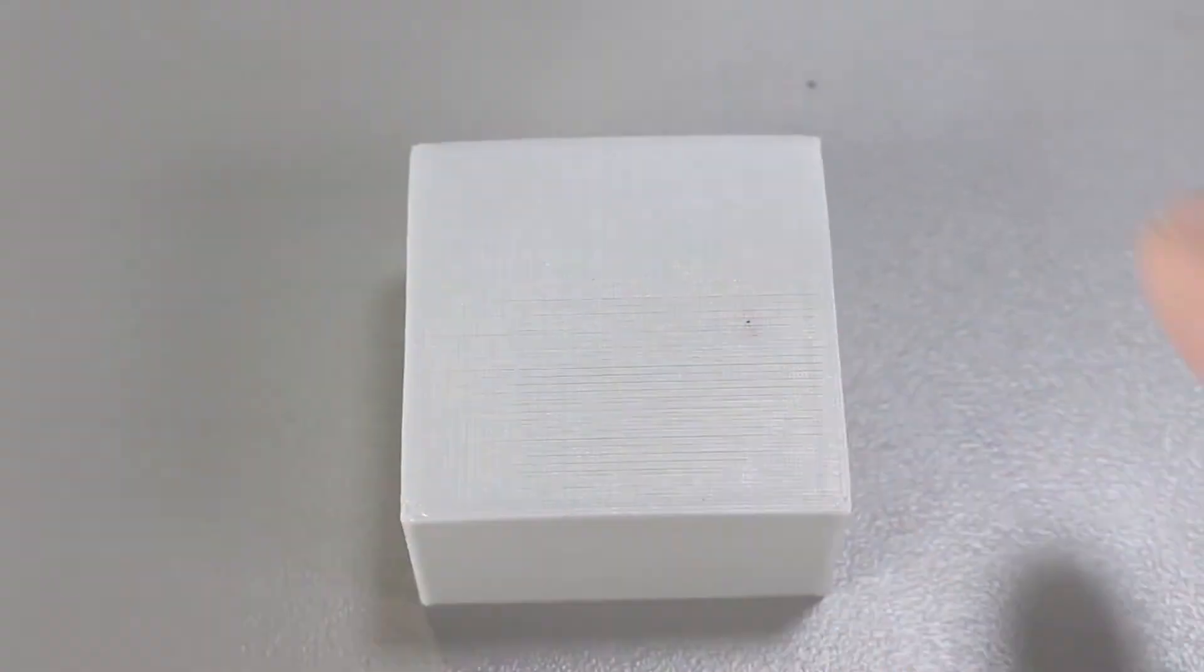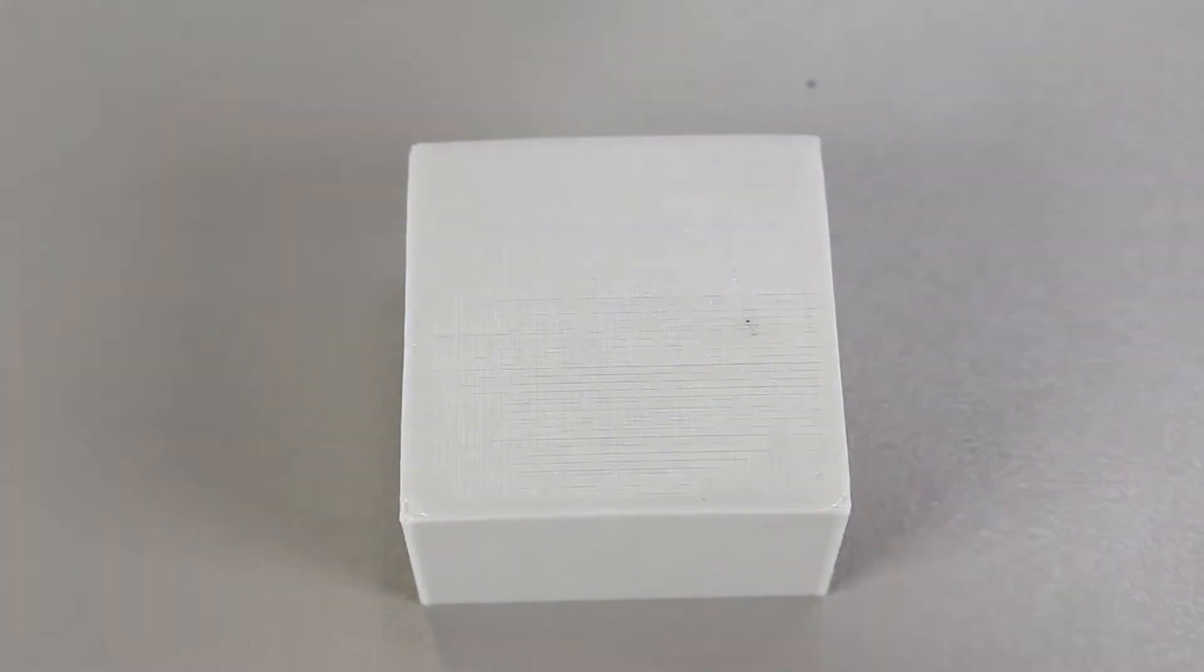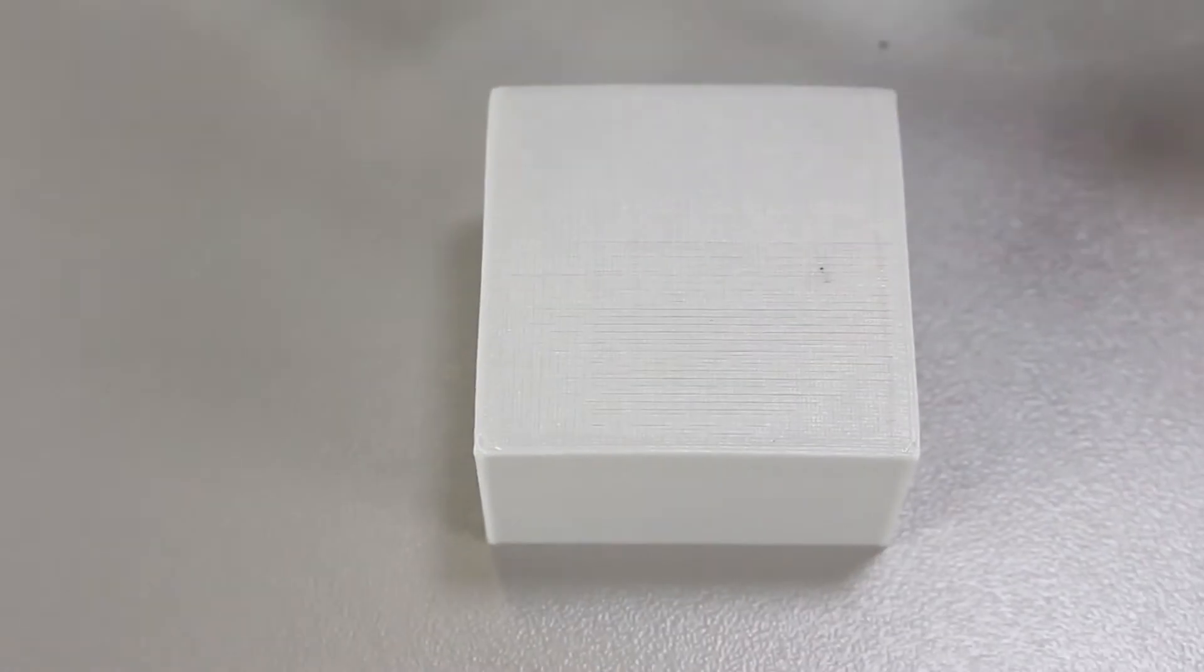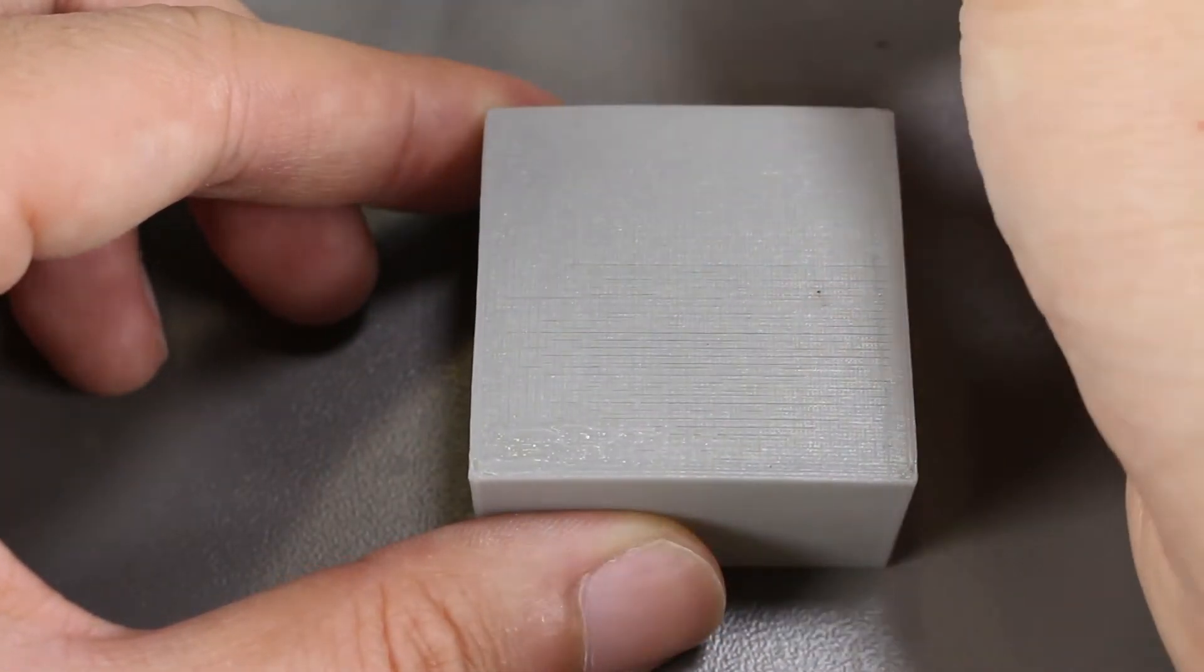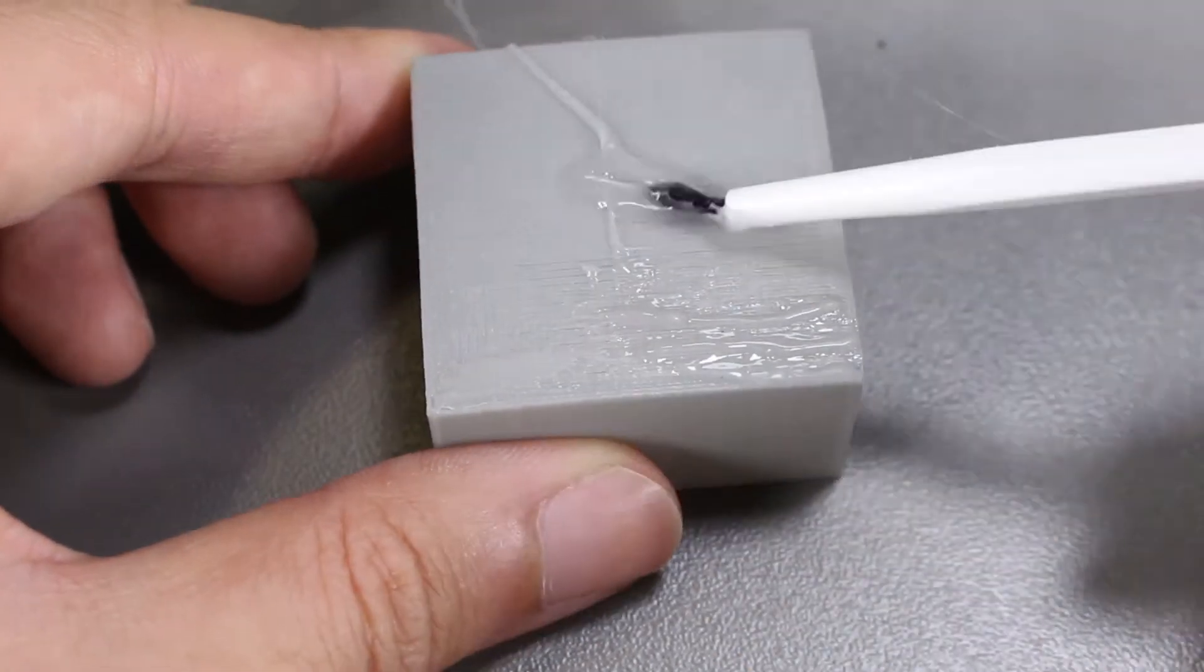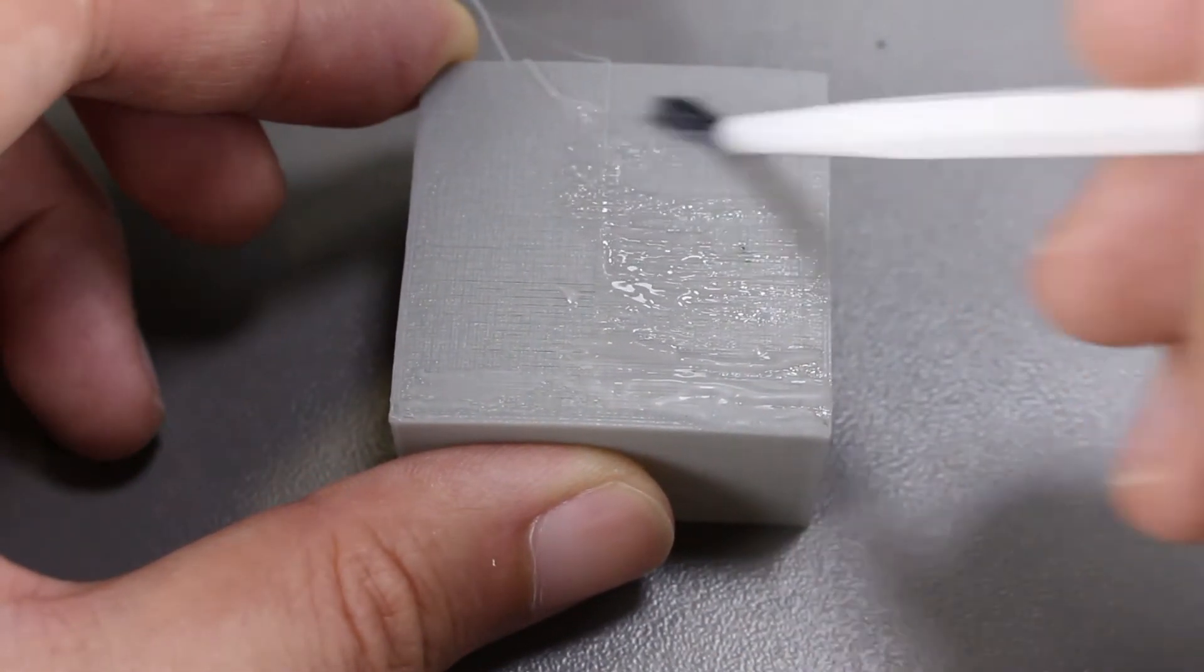Now let's try it on a grey print instead of a yellow print and we'll see whether or not we will get better results. The paste is drying up quite fast and it's starting to be very chunky.